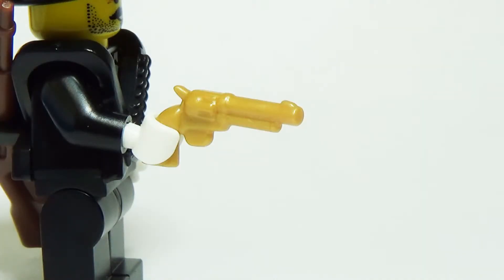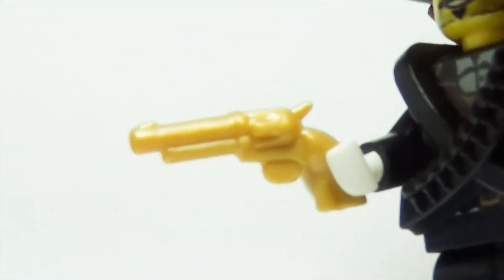Used by cowboys and bank robbers alike, this six-shooter is based on a number of revolvers used in the wild west. It would be crazy for any western minifigure to walk around without their trusty six-shooter holstered at their hip.